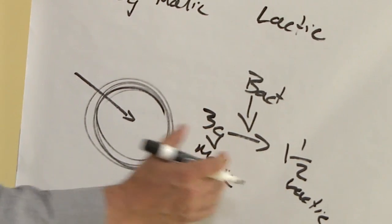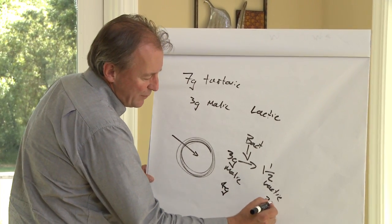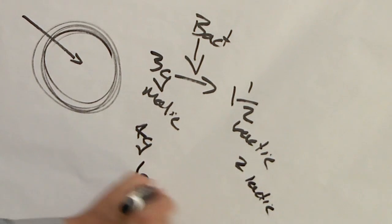If you're in a cool climate, this number could be four grams, so you're going to get two grams of lactic. If you're in a warm area, this could be one gram, so you'll only get half a gram of lactic.